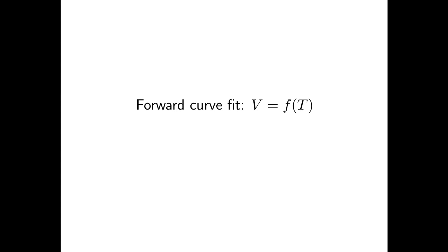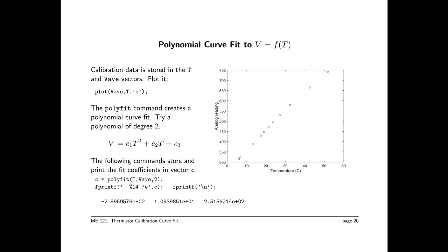First, we're going to do the forward curve fit, which is just fitting the data as if the purpose was to measure voltage as a function of temperature. Here's a plot on the right that was created with this command, plot Vav, T, circles. And we have already stored Vav, meaning that's the average reading at each of the temperatures. Using the polyfit command, we can create a polynomial curve fit. And for demonstration purposes, and in fact, for the actual calibration, a quadratic seems to work pretty well. The command C equal polyfit T Vav 2 executes the least squares curve fit and stores the results, the coefficients in a vector C.